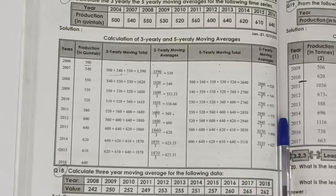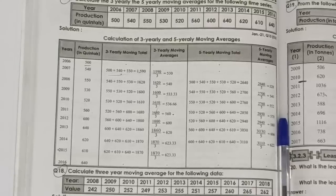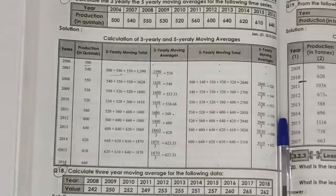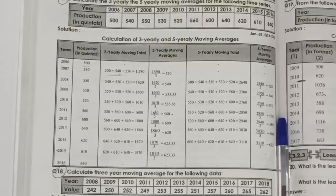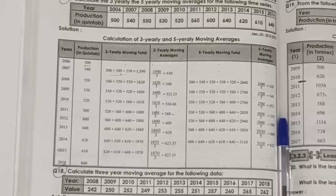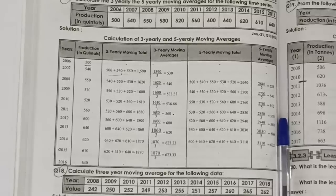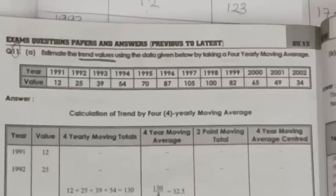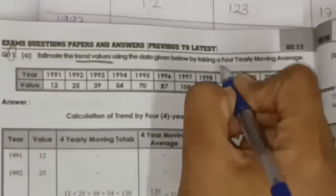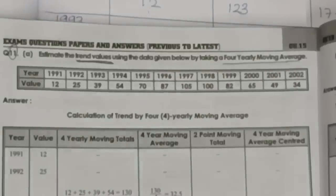If you are lucky, you will get three, five, or seven years, which are all easy. But four years moving average has some added difficulty. Make sure to practice these problems at home — it is very important. Just watching makes it seem easy, but when you actually do the calculations, you may make mistakes. So practicing is very important in business statistics.